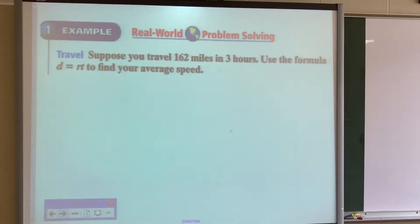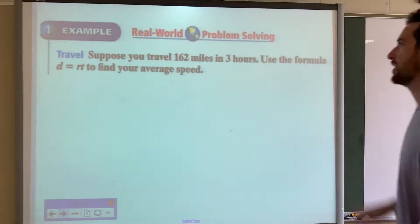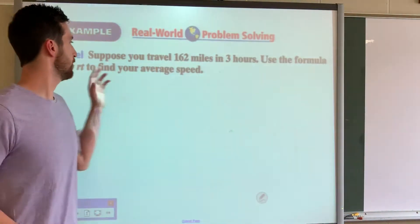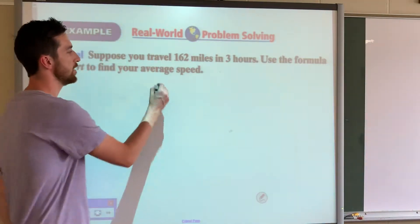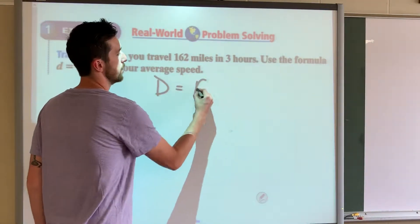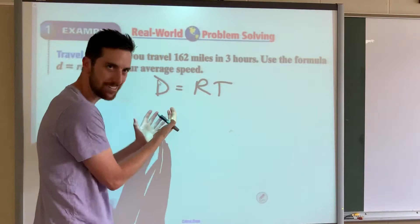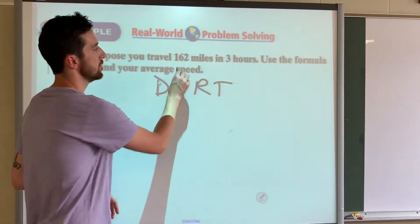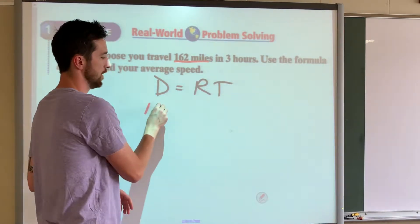Suppose you travel 162 miles in three hours. Use the formula D equals RT to find your average speed. D equals RT stands for distance equals rate times time. Our distance was 162 miles, so we can substitute that value in.